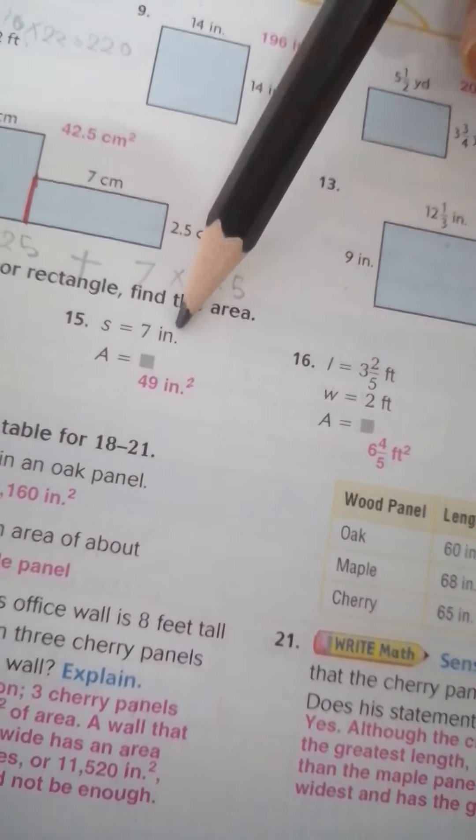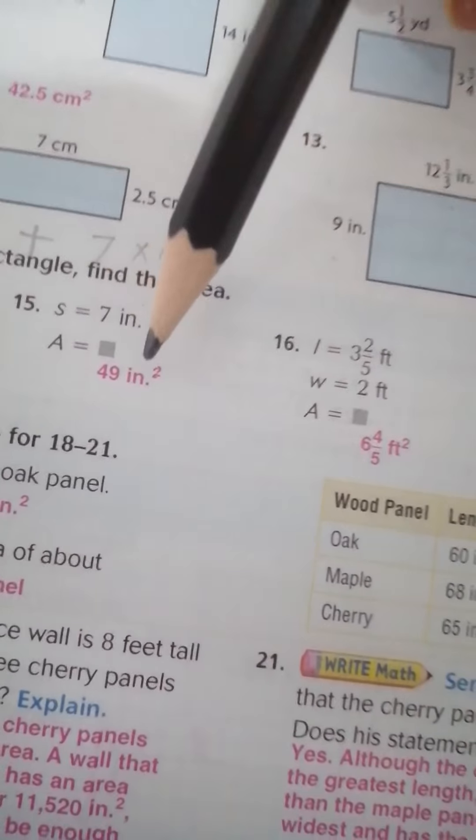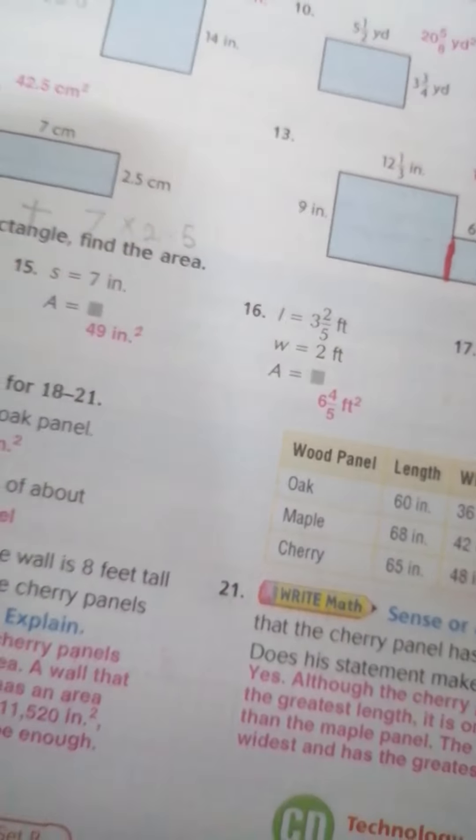Here 7 by 7 equal 49 square inch. Here width and length, 3, 2, 1 over 2 over 5, then by 2, equal the area 6, 4 over 5 square feet.